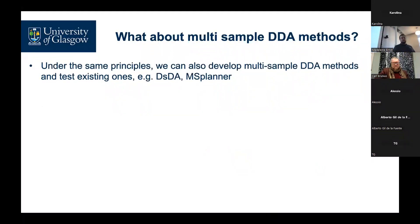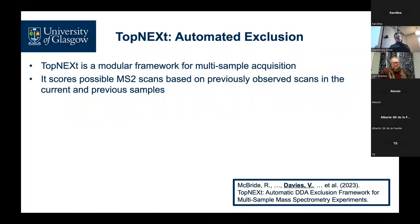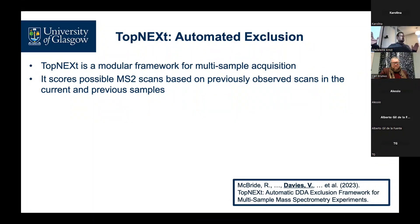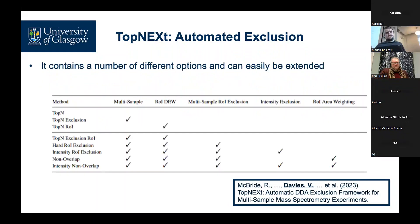We've also been looking at multi-sample DDA methods: how can we deal with samples that are very similar and where we keep seeing the same metabolites over and over? We want to use an exclusion that jumps across samples — instead of repeatedly fragmenting the same peak in multiple samples, we drag the exclusion from the first sample into the second. This method is called Top-NeXT. It's a framework that allows many different scoring strategies for different possible scans, and it allows you to do things that work across entire sets of samples.